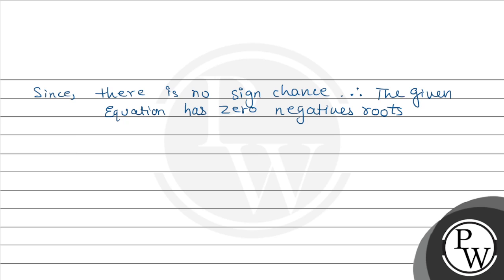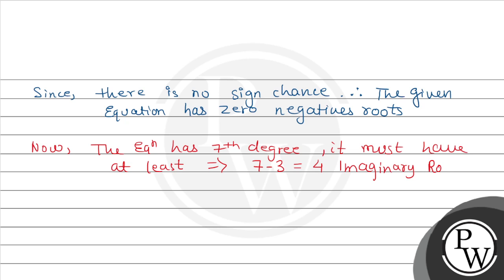Now, let's see. The equation has 7th degree, it must have at least 7 minus 3, that is 4 imaginary roots. Hence proved.